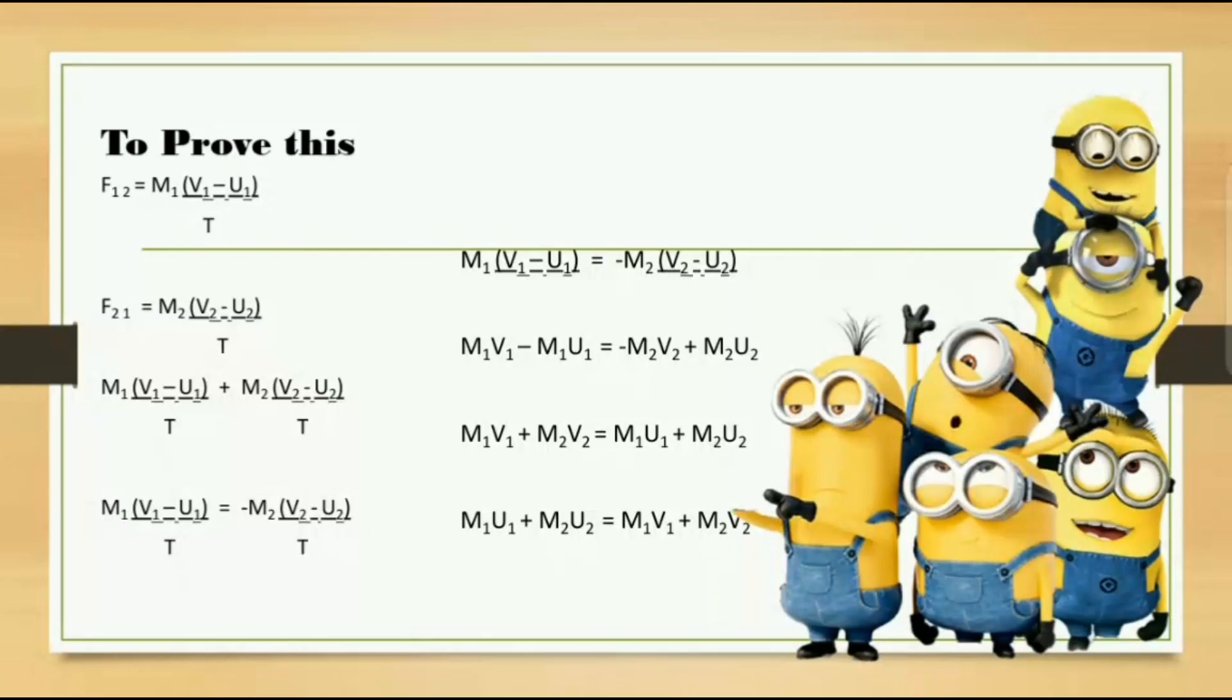Here, m1 u1 plus m2 u2 equals m1 v1 plus m2 v2. And these both are equal.